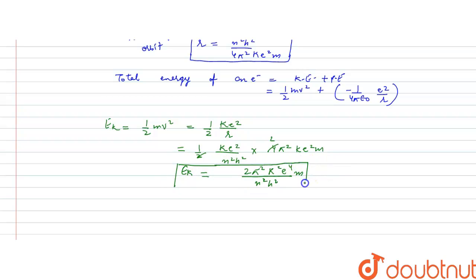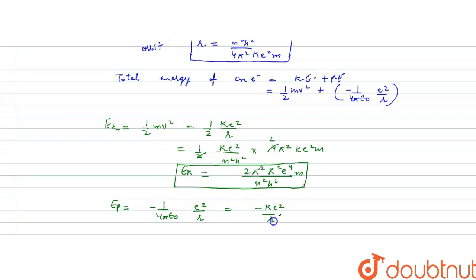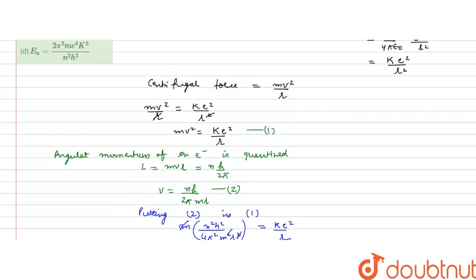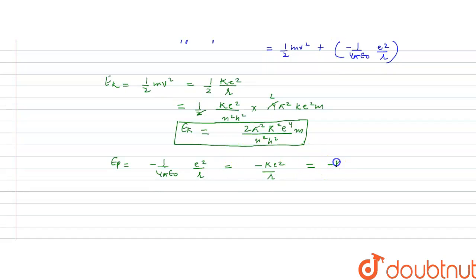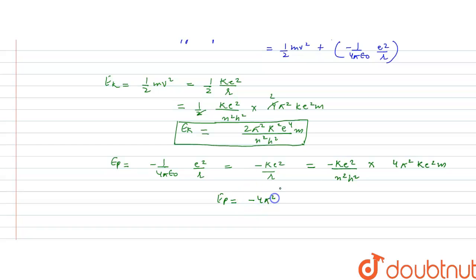Now we calculate the potential energy. Ep = −ke²/r. Substituting the value of r = n²h²/(4π²ke²m): Ep = −ke² × (4π²ke²m/n²h²). This gives the potential energy as: Ep = −4π²k²e⁴m / n²h².